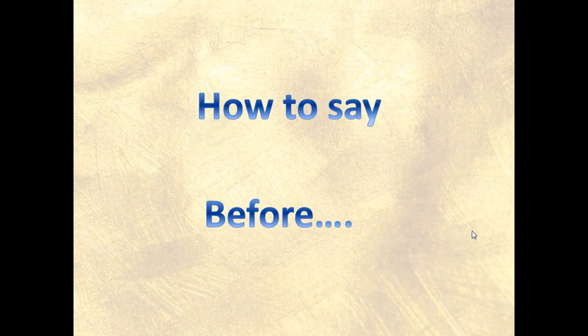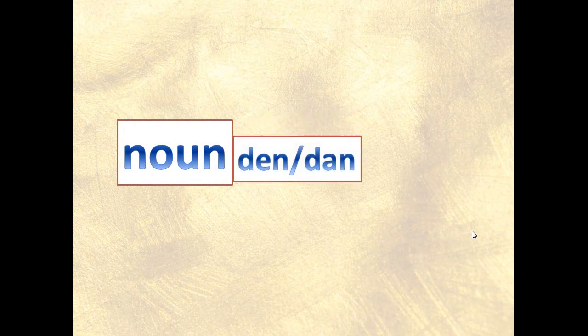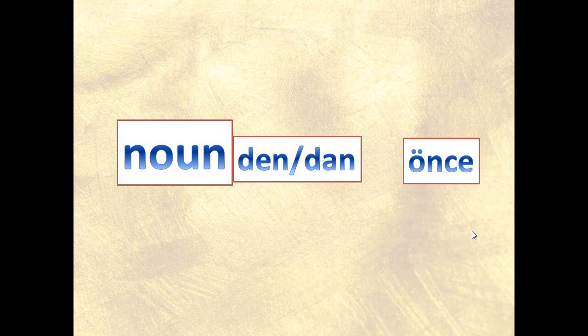How to say 'before'. First we're going to have a noun and then we have the suffix -dan or -don. Then we have the word 'önce'. Önce means 'before', and these phrases together will create the cluster of words that will mean 'before something'.